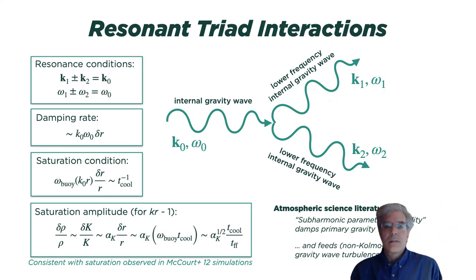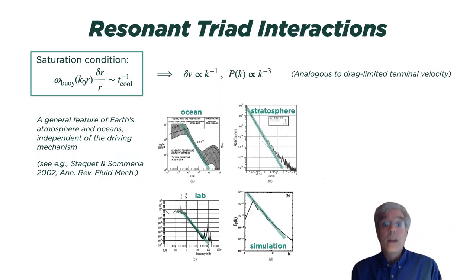And I mentioned then that the atmospheric and oceanographic literature talks about this quite a bit. Here is a figure that shows some examples of how resonant triad interactions between gravity waves cause a cascade of energy that characteristically has a power spectrum that goes like k to the minus three and a velocity structure function that goes like k to the minus one.